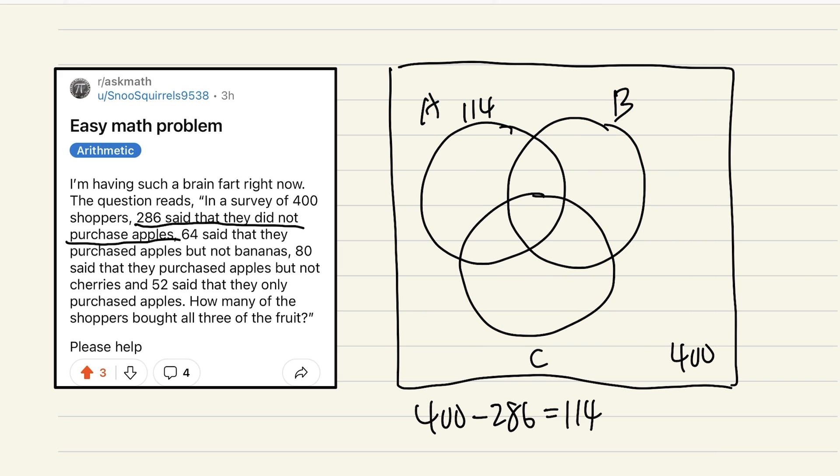And I think I'm going to look at this first. Right here it said 52 said that they only purchased apples. That's great because we can put on 52 right here right away.